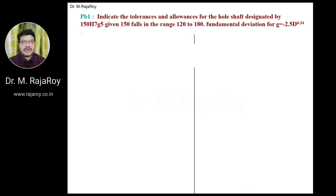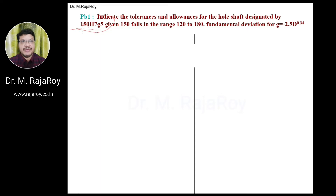Given: 150 falls in the range of 120 to 180. The fundamental deviation for small g is minus 2.5 D to the power of 0.34. Now you have to identify the tolerances and allowances for this particular 150 S7 G5.